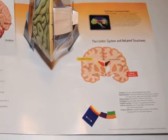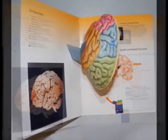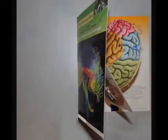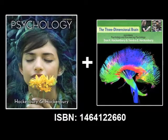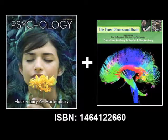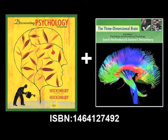You can receive a copy of the three-dimensional model brain upon request, or contact your local WORTH representative for an in-person demo. To order the three-dimensional model brain with Hockenberry & Hockenberry Psychology 5e for your students, use this ISBN. To order it with Hockenberry & Hockenberry Discovering Psychology 5e, use this ISBN.